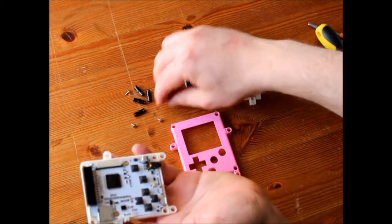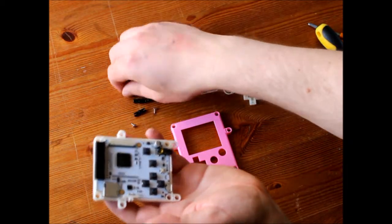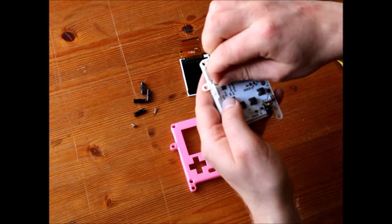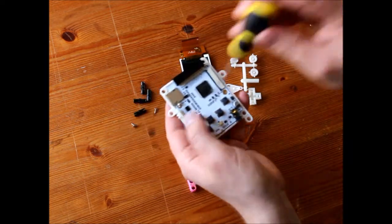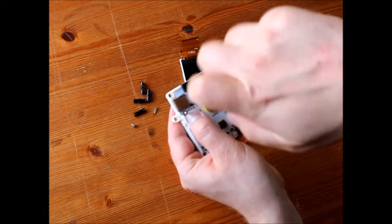Then you take two of the screws. These are 1.7 millimeter screws. Drop one in here, tighten.